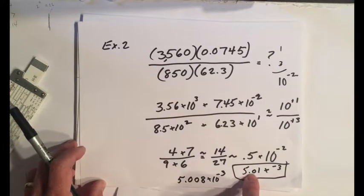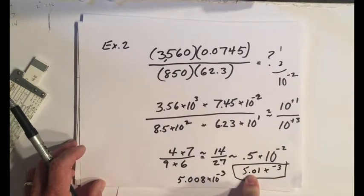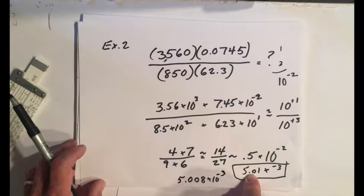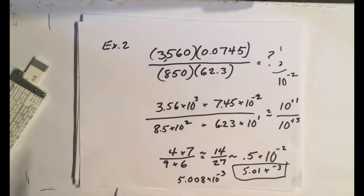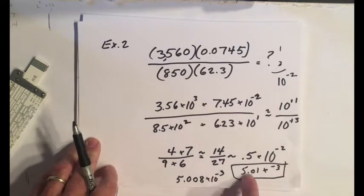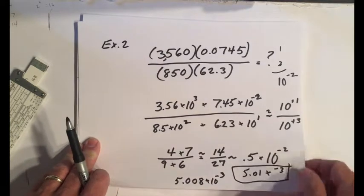And more often than not, your slide rule using the C and D scale will come out within an order of magnitude. Maybe sometimes your estimate is not so good, it might be 6 times 10 to minus 3 or something like that. So you would just know that it's in the order of minus 3.